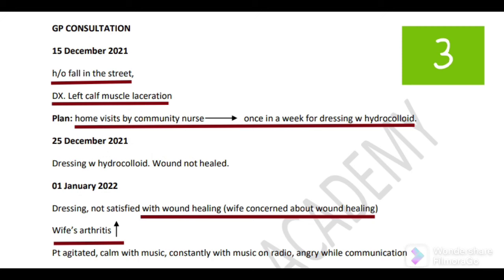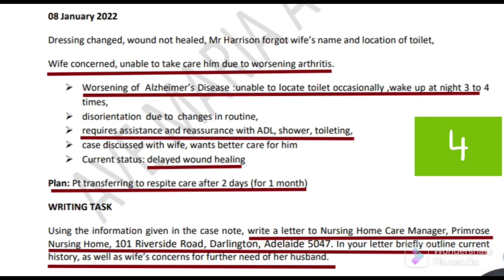At the same time, the wife's arthritis is showing increasing signs and symptoms. Patient got agitated but calm with music, constantly with music on radio but angry while communication. On 8 January 2022 - when you are writing the exam, this is the date of the letter - we changed the dressing but wound is not healed still. Mr. Harrison could not find his wife's name and location of toilet. Wife is more concerned because he could not find the bathroom. Moreover, he used to wake up at night 3 to 4 times. We can see worsening of Alzheimer's disease - unable to locate toilet occasionally, wakes up at night 3 to 4 times - and disorientation due to changes in routine, requiring assistance with daily living activities including showering and toileting.